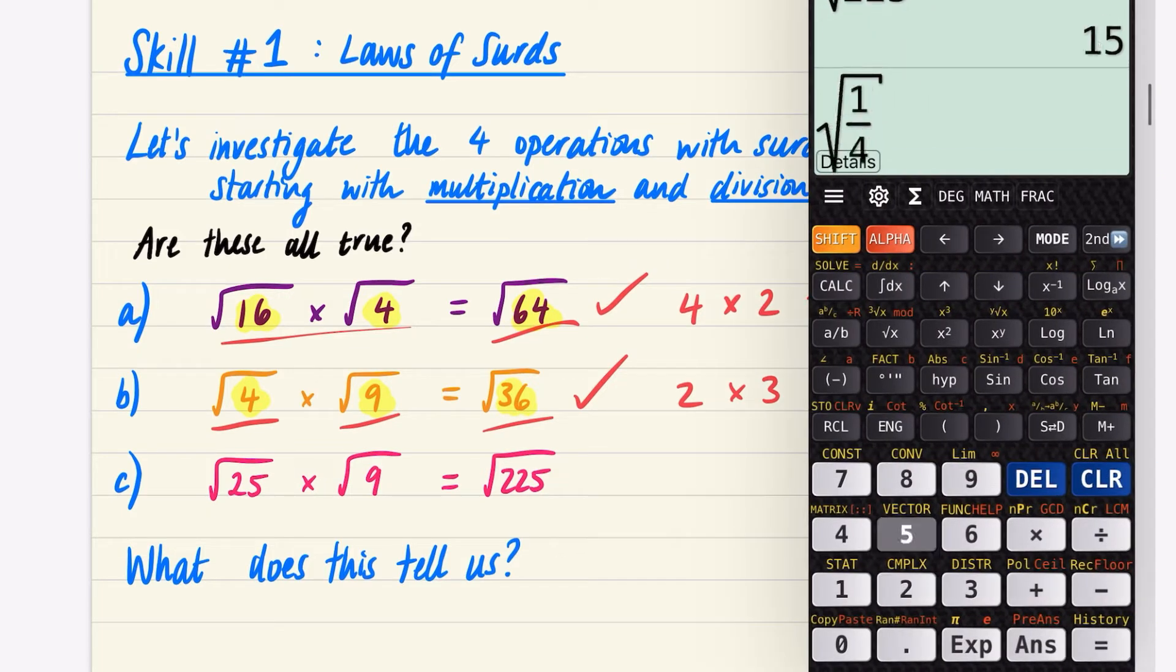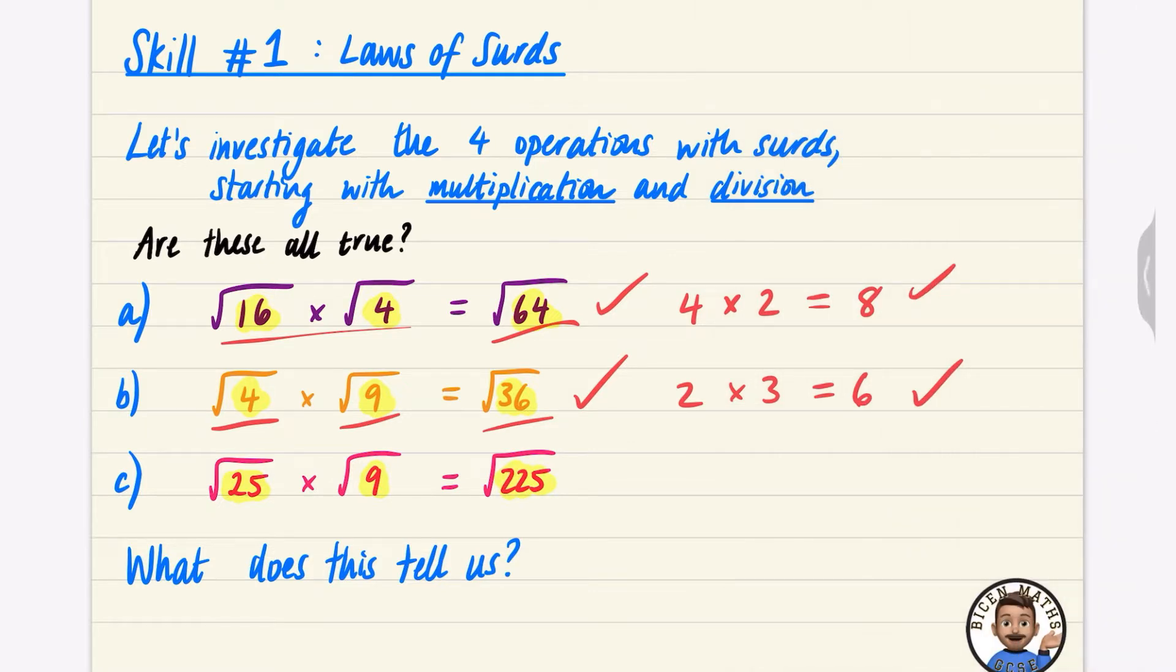Let's check that 25 times 9, yeah, it is 225. That times that is that. Well, let's just check it's true though, to begin with.